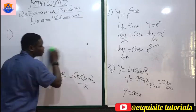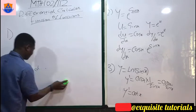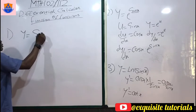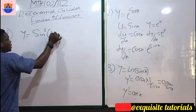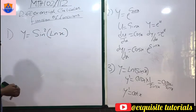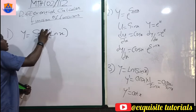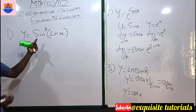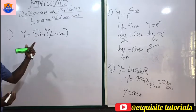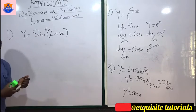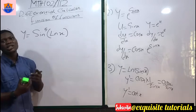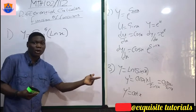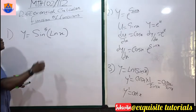Let's go deeper. What if you have y = sin⁵(ln x)? Using the shortcut: anytime you have a power, the power comes down first. So the 5 comes down, giving 5 times sin^(5−1)(ln x) = 5 sin⁴(ln x).